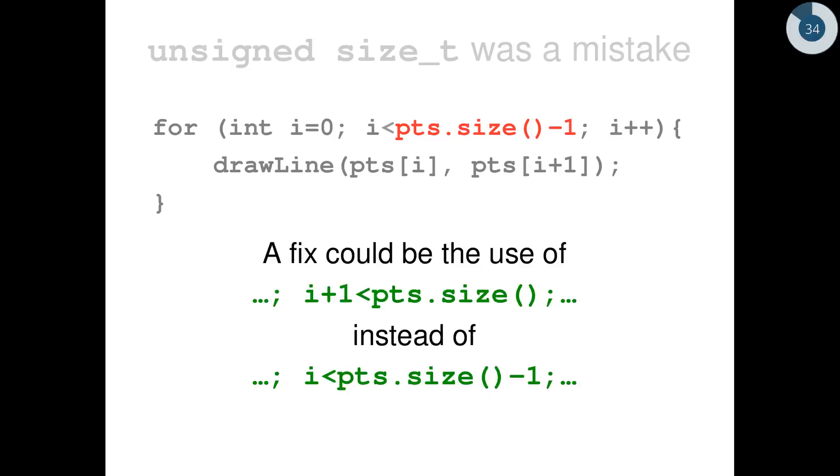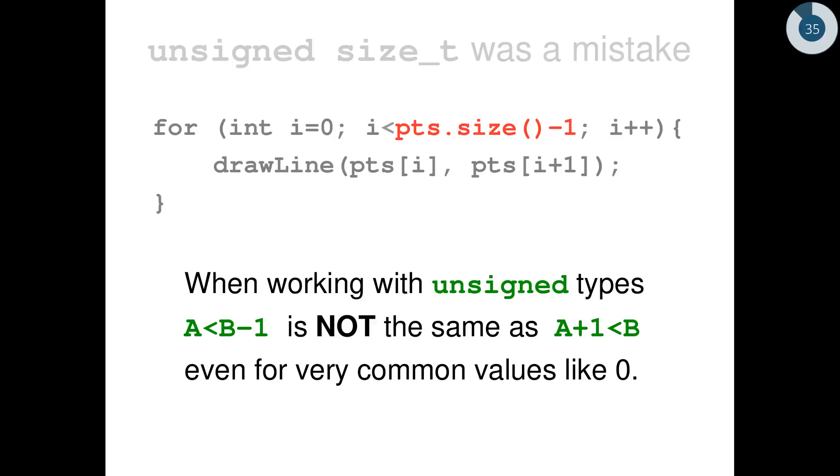For example, a way to solve it is to change the test from i less than pts.size() minus one to i plus one less than pts.size(). This is a very small change, but now the code is correct. With unsigned types, a less than b minus one is not the same as a plus one less than b. Even for the very common value zero. Zero is the size of an empty container. And I think that most C++ programs, probably every C++ program that handles containers, in some point in time has empty containers around. So empty containers are very common. And you can get in this kind of trap, because of the size of an empty container being zero, unsigned zero.